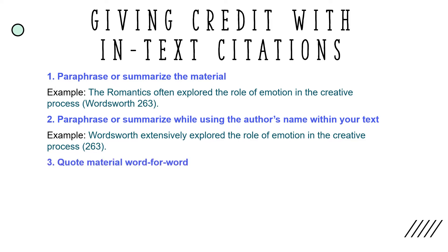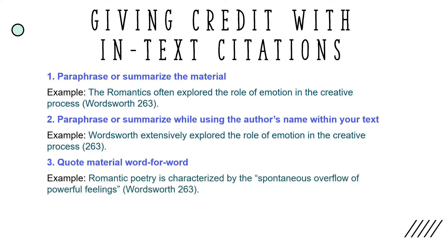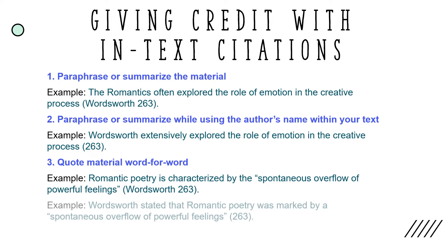You can also quote the material word-for-word. Use quotation marks around material that is directly quoted word-for-word from your source. If you don't mention the author's name within your text when quoting material, you will need to include it along with the page number in your in-text citation. The writer uses quotation marks around the material quoted word-for-word; since the author's name is not mentioned in the text, it's included along with the page number. For example: "Wordsworth stated that romantic poetry was marked by a spontaneous overflow of powerful feelings." Here the author's name is mentioned in the text, so only the page number needs to be included.